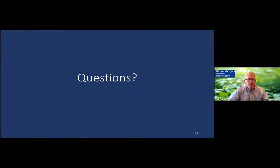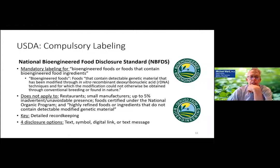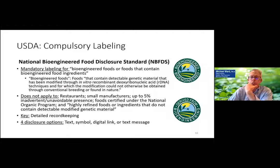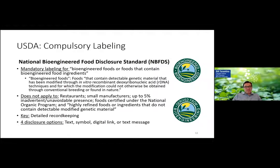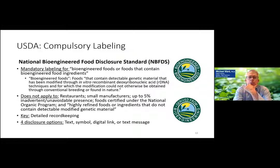So our edited orange tree — it sounds like it would not have to have this bioengineered label. Is that correct? Because if we started with a mutant that was found in nature and then created the same thing — the definition says modification could not otherwise be obtained through conventional breeding or found in nature — the fact that we found ours in nature is helpful to our cause. Both Bethany and Bill agreed with that characterization.